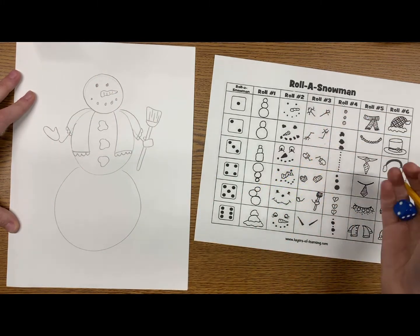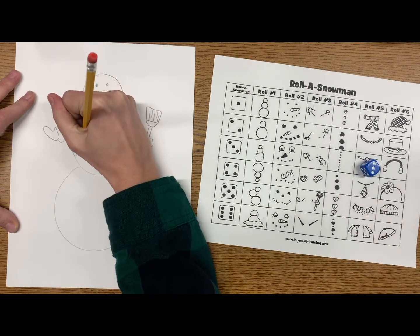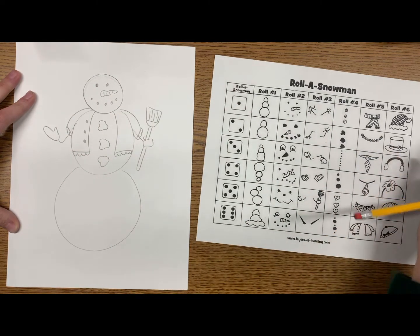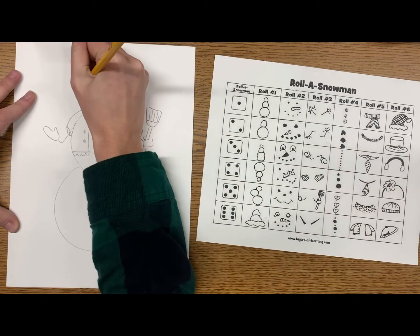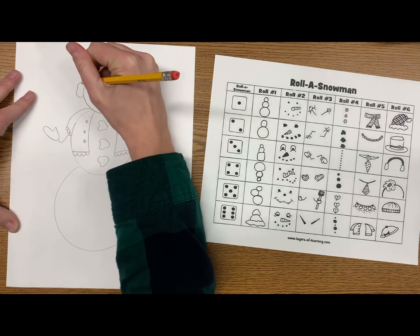Our very last roll is for what is going to be on the top of our snowman's head. Looks like I have a three, so I'm coming down to the earmuffs. And I'm going to add that on the top of my snowman. And my snowman is complete.